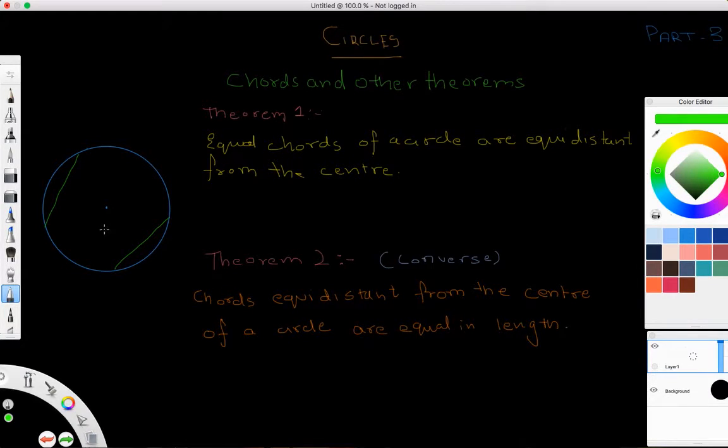Equal chords will be equidistant from the center. Thus, if the chords are equal, the distance from each chord to the center will be equal. There's no way we can algebraically prove this.